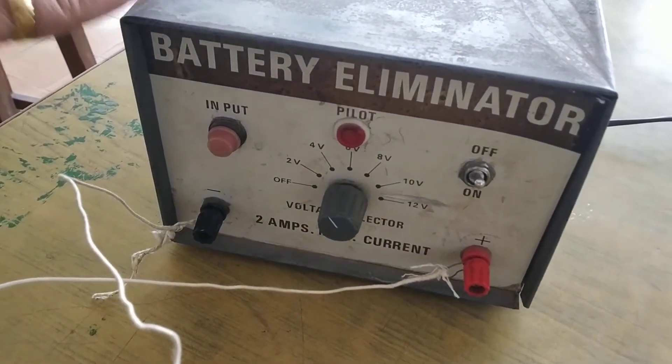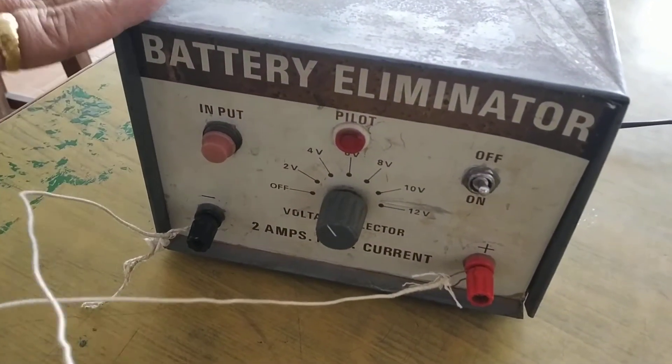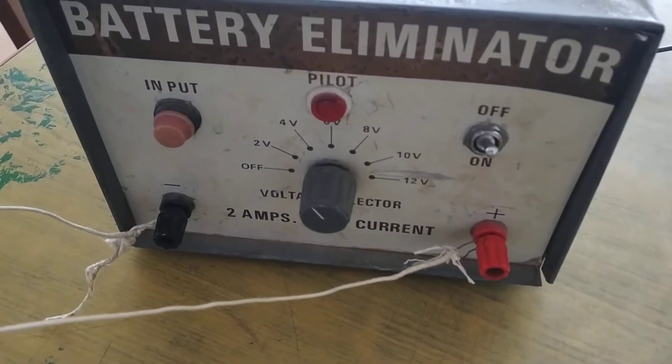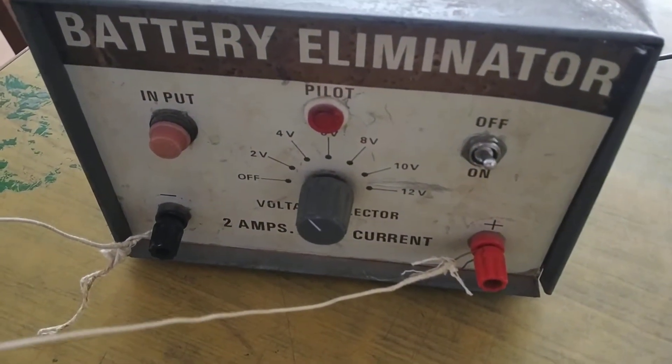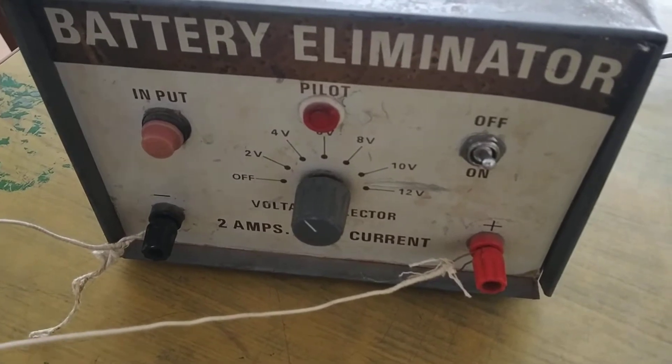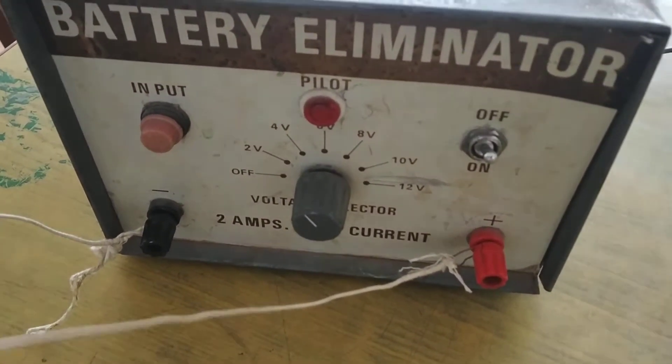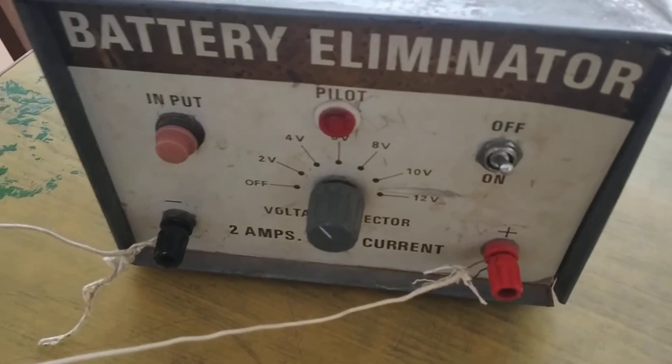This is a battery eliminator which operates on four volts and provides DC current. The red terminal indicates positive and the black one indicates negative.